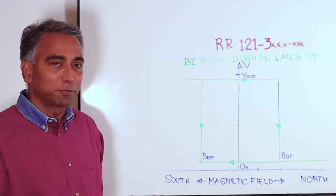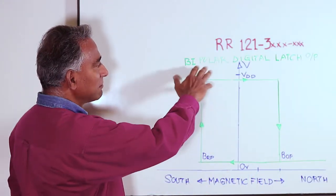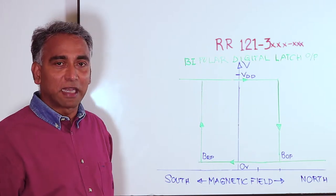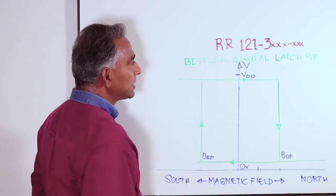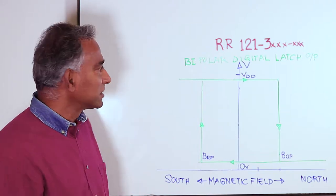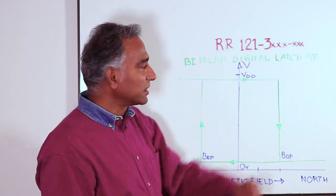This chart represents the output of KOTO Technology's bipolar digital latch output sensor such as the RR121-3-XXX representing different variants.